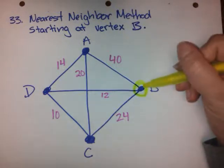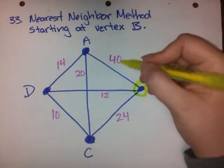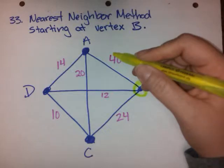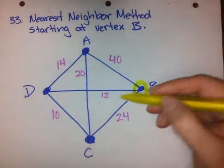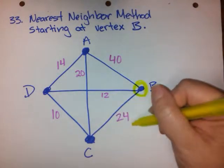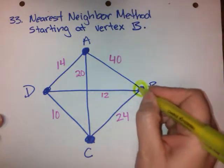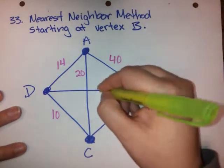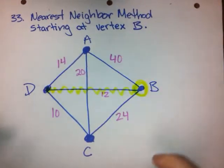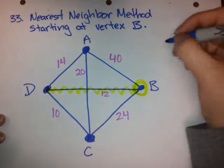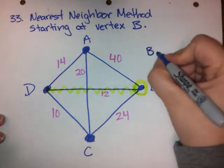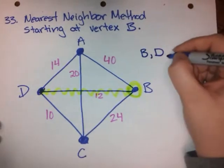So starting at B, my choice is I could go to A, but that would cost me 40. I could go to D, that would cost me 12. Or I could go to C, that would cost me 24. So the cheapest way to go is going to be going from B to D for a cost of 12. The other two are more expensive. So my circuit is going to be B to D.